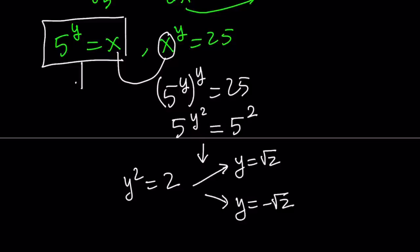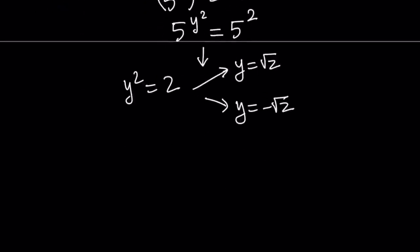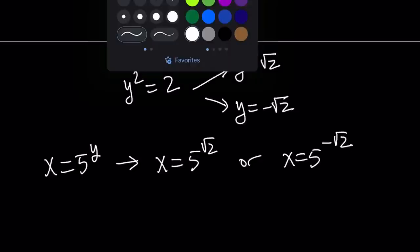We know that x and y are related by this equation. 5 to the power y equals x. So x is the same as 5 to the power y. So if y is equal to square root of 2, then x is either 5 to the power square root of 2 or x is 5 to the power negative square root of 2. Basically, there are two solutions to this equation.